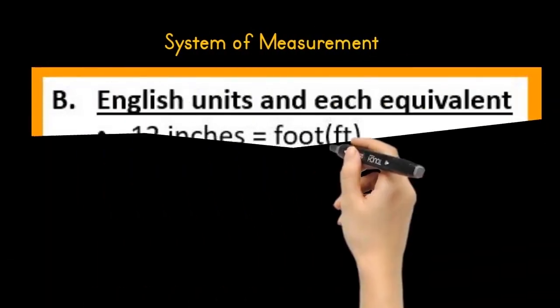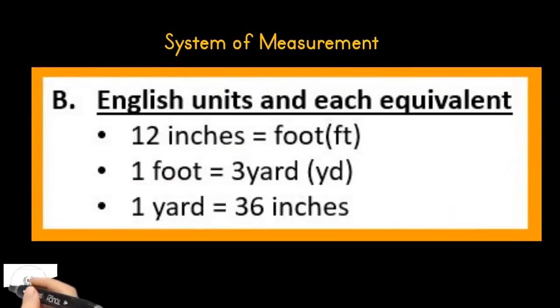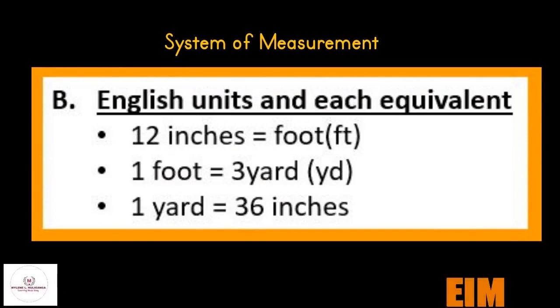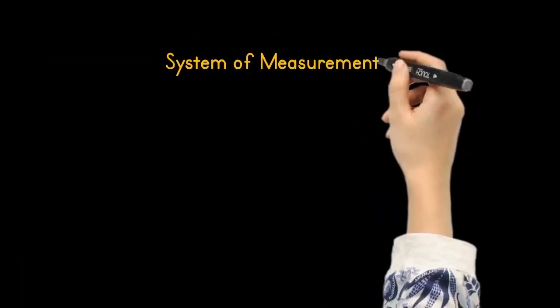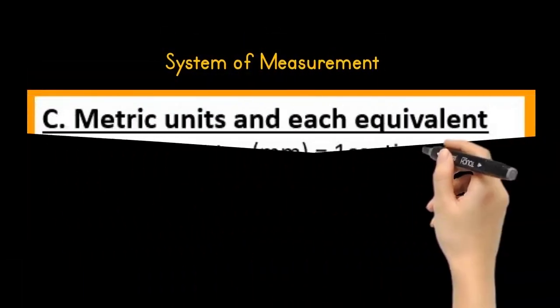The English units in each equivalent: 12 inches is equal to one foot, one foot is equal to three yards, and one yard is equal to 36 inches.